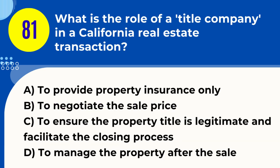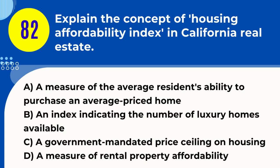Question 81. What is the role of a title company in a California real estate transaction? A. To provide property insurance only. B. To negotiate the sale price. C. To ensure the property title is legitimate and facilitate the closing process. D. To manage the property after the sale. Answer: C. Explanation. In California real estate transactions, a title company plays a crucial role in ensuring that the property title is legitimate and clear of any liens or encumbrances. They conduct a title search, provide title insurance to protect against future claims, and often facilitate the closing process, handling the paperwork and the exchange of funds.